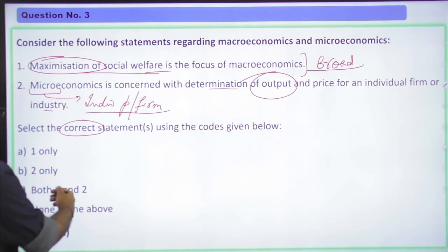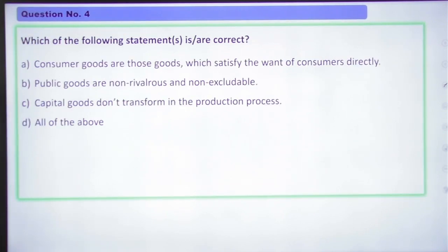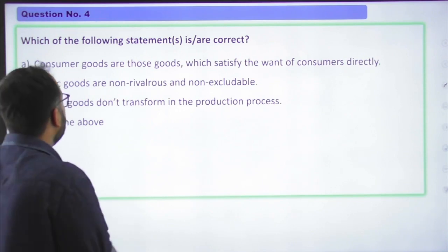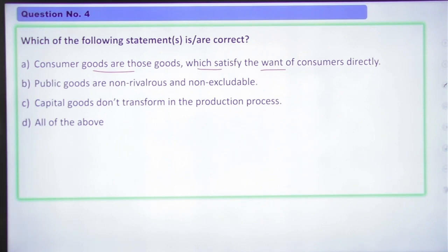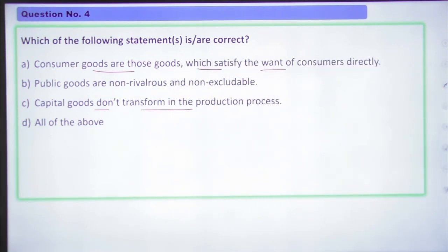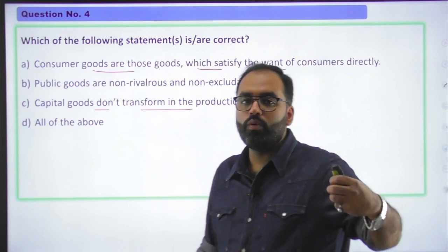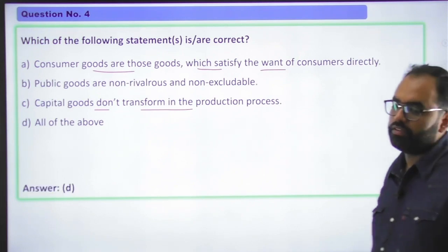Moving to question number four. Which of the following statements is/are correct? Consumer goods are those goods which satisfy the wants of consumers directly. Public goods are non-rivalrous and non-excludable. Capital goods do not transform in the production process. And d, all of the above. This is again a concept based question from the very basics of economics. Please make sure that you mark your answers in the comment box. All statements are correct.